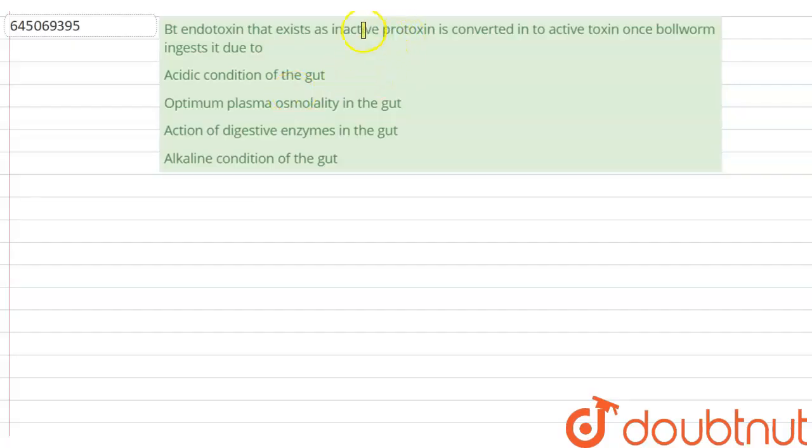BT endotoxin that exists as inactive protoxin is converted into active toxin once bollworm ingests it due to? And the options are: acidic condition of the gut, optimum plasma osmolality in the gut, action of digestive enzymes in the gut, alkaline condition of the gut.